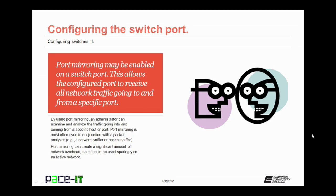Port mirroring may also be enabled on a switch port. This allows the configured port to receive all network traffic going to and from a specific port. By using port mirroring, an administrator can examine and analyze traffic, most often in conjunction with a packet analyzer — also known as a packet sniffer. It is used to determine network optimization methods or security measures. However, port mirroring can create significant network overhead, so it should be used sparingly and shut down once research has concluded.